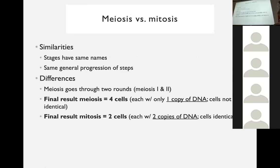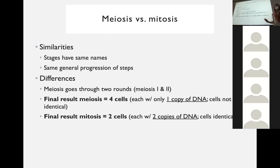Comparing mitosis versus meiosis — some similarities and differences. The stages conveniently have the same names: prophase, metaphase, anaphase, telophase, in both meiosis and mitosis, and in the same general order. If you remember that order from mitosis, you're already halfway through. The main difference is that mitosis happens just once — one round. With meiosis, if you start with one cell, it undergoes two rounds of division. In mitosis we split one cell into two identical cells — clones of each other.